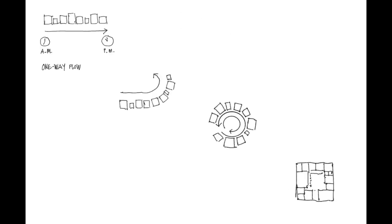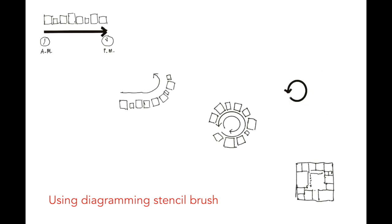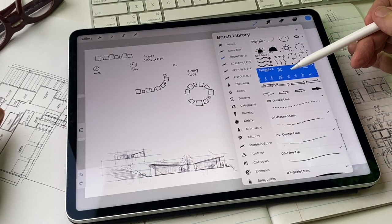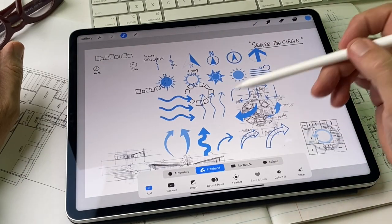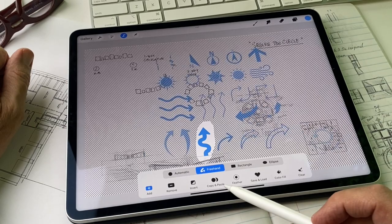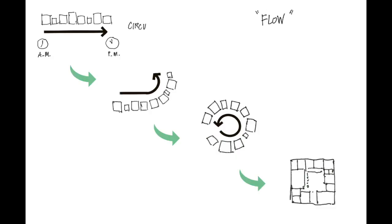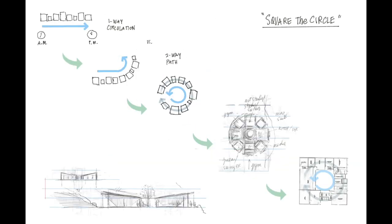Here's an example of using Procreate to tell the story of these different diagrams. Here are the diagramming stencils I've created — you can purchase these at the link in the description below. These stencils give the sketches a little more of a professional feeling, especially compared to Rhino sketches.